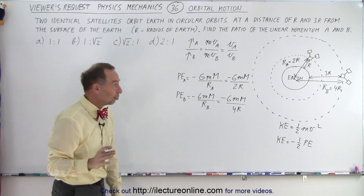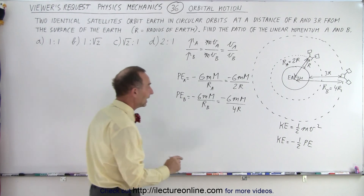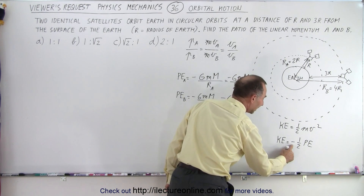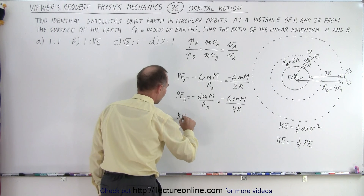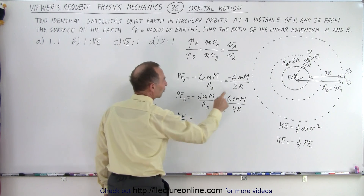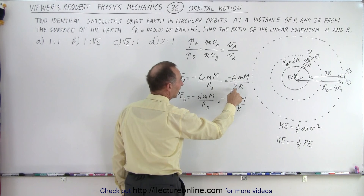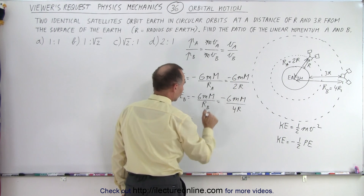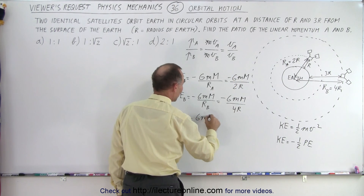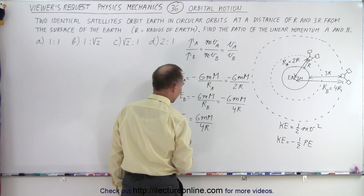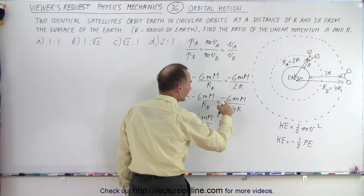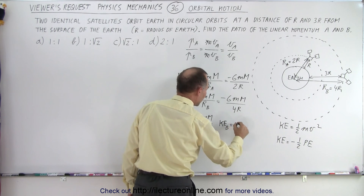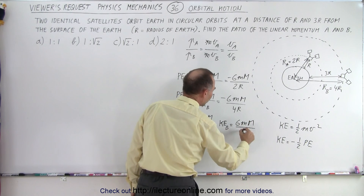Now we have the potential energy of both satellites. We find the kinetic energy by taking negative one-half times the potential energy. The kinetic energy of A is negative one-half of (−GmM/2R), so the negative drops out, giving GmM over 4R. The kinetic energy of satellite B is negative one-half of (−GmM/4R), which equals GmM over 8R.